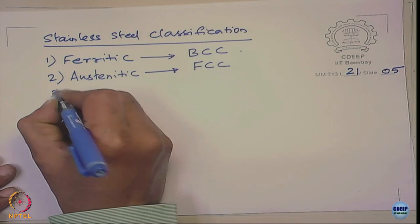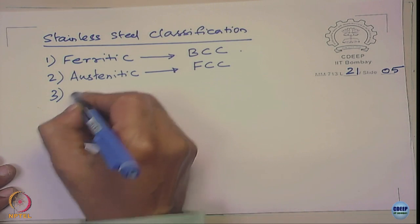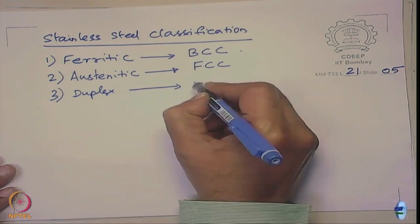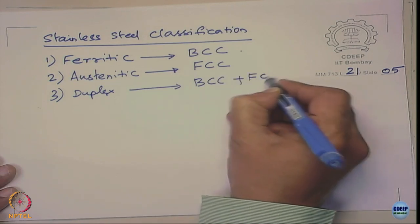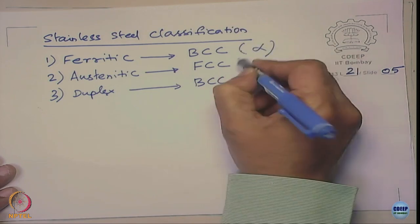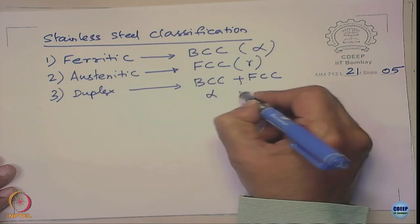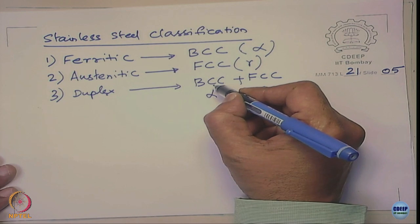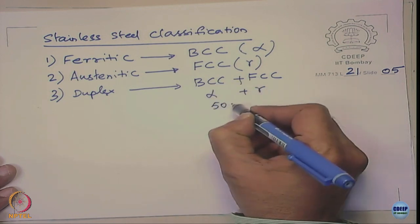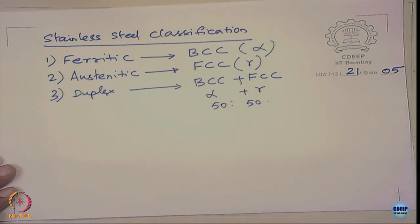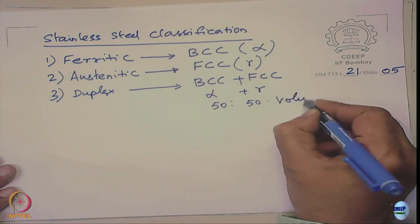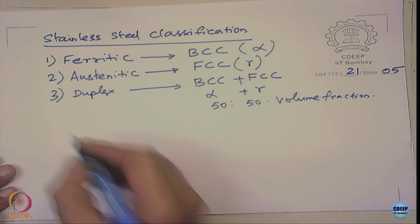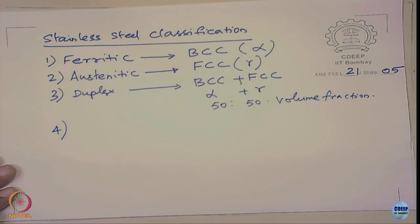You can have a combination of these two — we call them duplex grade stainless steels, with BCC (alpha) plus FCC (gamma) structures. Generally, the volume fraction of these two phases is 50 percent each.